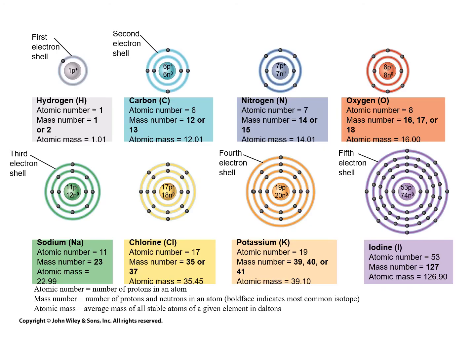This slide depicts several different important elements and some of their characteristics. So for example we have hydrogen, its chemical symbol is H, atomic number is 1, mass number is 1 or 2, and its atomic mass is 1.01. You can also see a depiction of the atom up above showing one proton in the nucleus and one electron swirling around it.